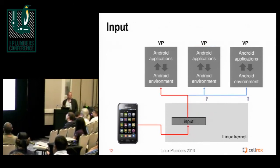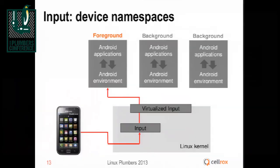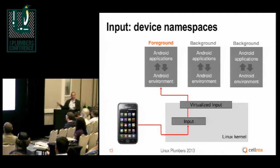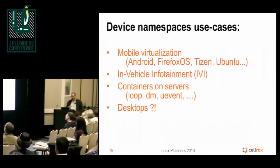Same thing with the input: you want the input to only go to one container. So you virtualize the input subsystem and ask a simple question: is the client registered for this event running in the foreground or in the background namespace? If it's foreground, pass the event; otherwise, don't pass the event. There are some exceptions for that which I won't go into right now, but it's fairly simple code that goes in there. When you switch, the input goes somewhere else.